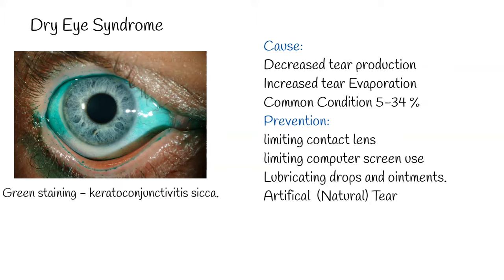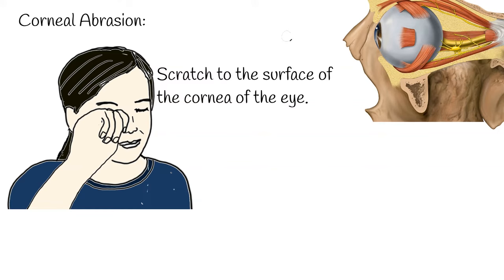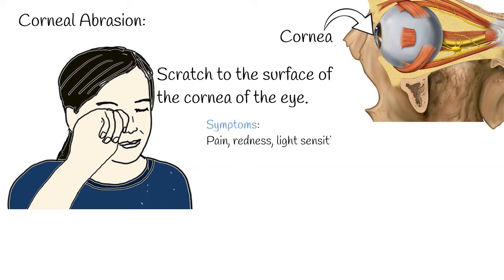Corneal abrasion is a scratch to the surface of the cornea of the eye. The cornea is the transparent front layer of the eye that covers the iris and pupil. It is an optical, lens-like structure that refracts light towards the midline. Symptoms of corneal abrasion include pain, redness, light sensitivity, and a feeling like a foreign body is in the eye. In case of corneal abrasion, a foreign body within the eye should be ruled out.